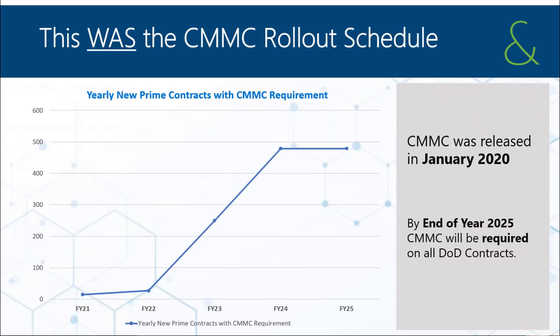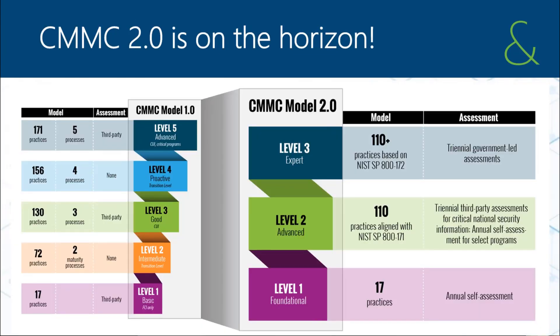Back in January 2020 when CMMC was first announced, the rollout plan showed the number of contracts that would require CMMC certification over time, with the goal that by 2025 all of that would be enforced. That is not the case anymore. A couple of months ago in early November, the Department of Defense announced the new CMMC 2.0 framework. There were aspects of the original CMMC 1.0 framework that they felt needed to be changed — so just as quickly as CMMC arrived, there are changes already.